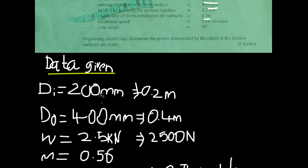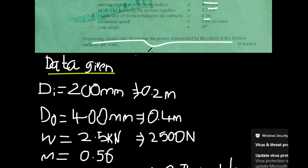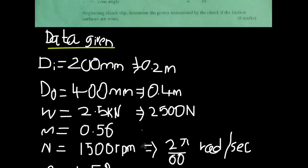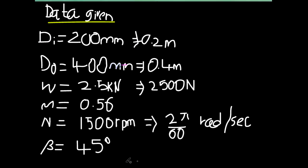Let's go back to the question. They are saying: neglecting clutch slip, determine the power transmitted by the clutch if the surfaces are worn. So they want the power — they want us to find the power of the clutch.